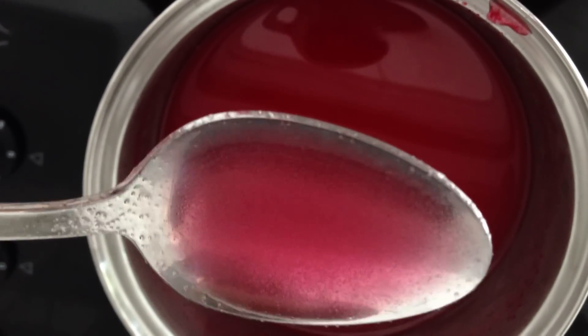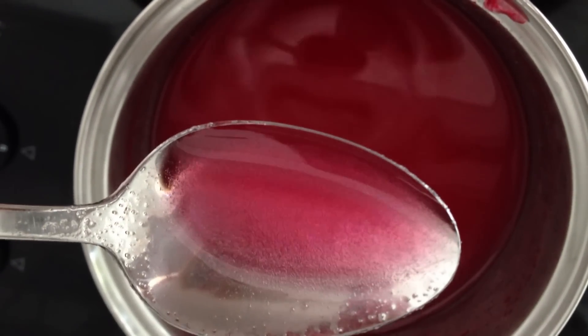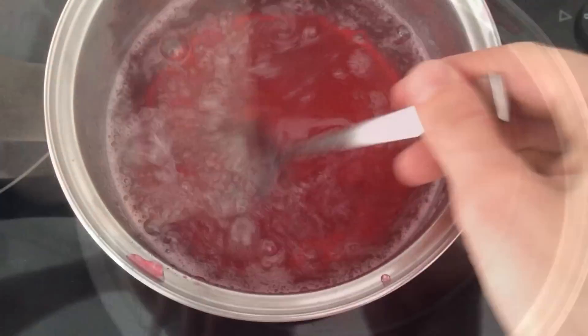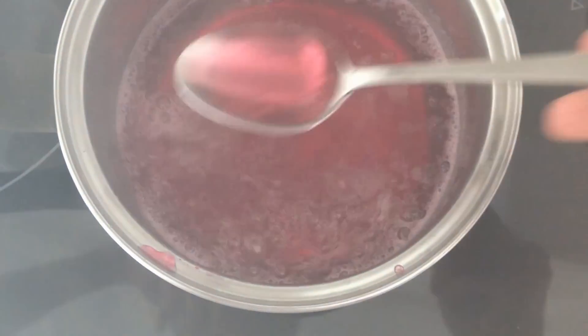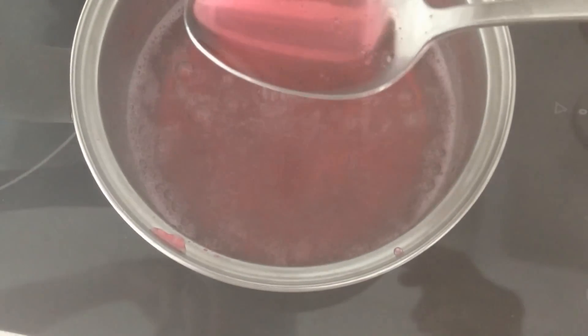Heat those up until it just starts to boil and you can't see any little crystals of sugar in there anymore. Lift some up on your spoon, let the bubbles disperse, and check that it's totally clear.